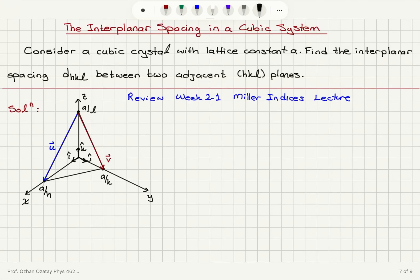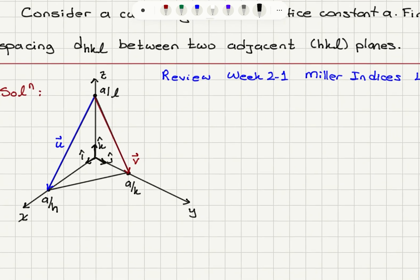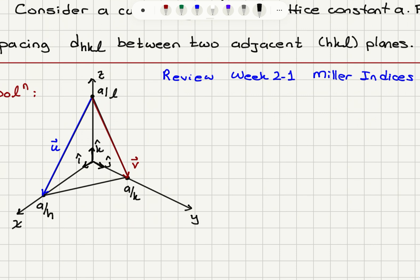The interplanar spacing in a cubic system. Consider a cubic crystal with a lattice constant A. Find the interplanar spacing d_HKL between two adjacent HKL planes. By the definition of Miller indices, this HKL plane will intersect the x, y, and z axes at A/H, A/K, and A/L, as you can see here. I picked two vectors U and V that are on this plane and that are non-collinear.